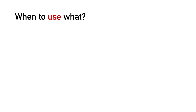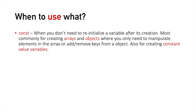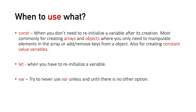Now after learning all these differences, it is essential to know when to use var, let, and const. Const is used when you don't need to re-initialize a variable after its creation. In the programming world, it is most commonly used for creating arrays and objects where you only need to manipulate elements inside the array or add or remove keys from the object. Const is also used for constant value variables — for example, you can declare a const variable 'pi' with value 3.14 for mathematical calculations, as you're certain this value won't change. Apart from these circumstances, you use let when you need to re-initialize a variable. Finally, you should totally avoid using var, as most use cases can be covered with let and const, which are the new ways of declaring variables in JavaScript.